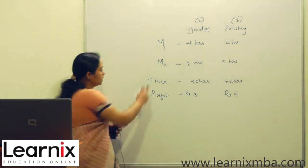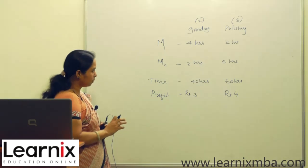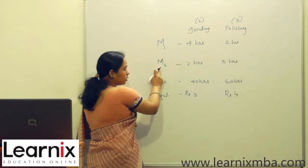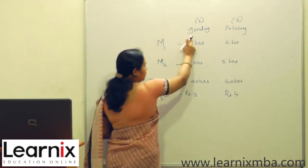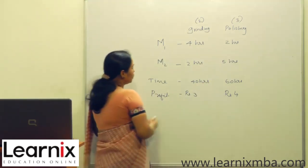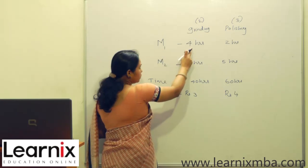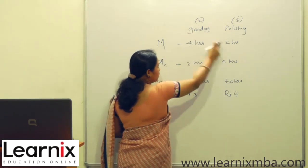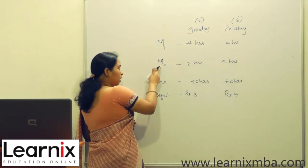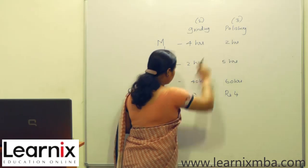There are two models, M1 and M2, which produce the same item. Each model requires two processes: a grinding process and a polishing process. To produce one unit of model M1, it requires four hours on the grinding machine and two hours on the polishing machine. For model M2, it requires two hours on grinding and five hours on polishing.